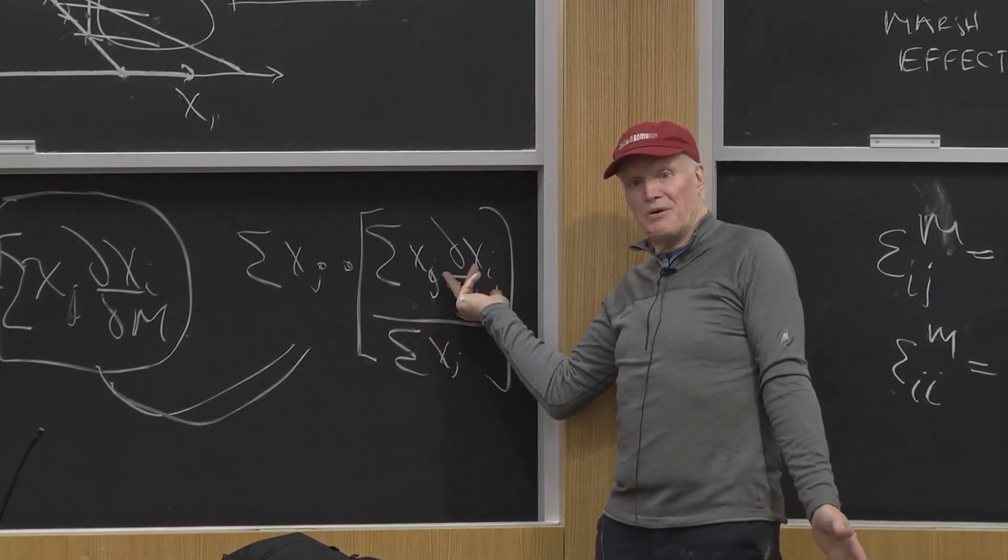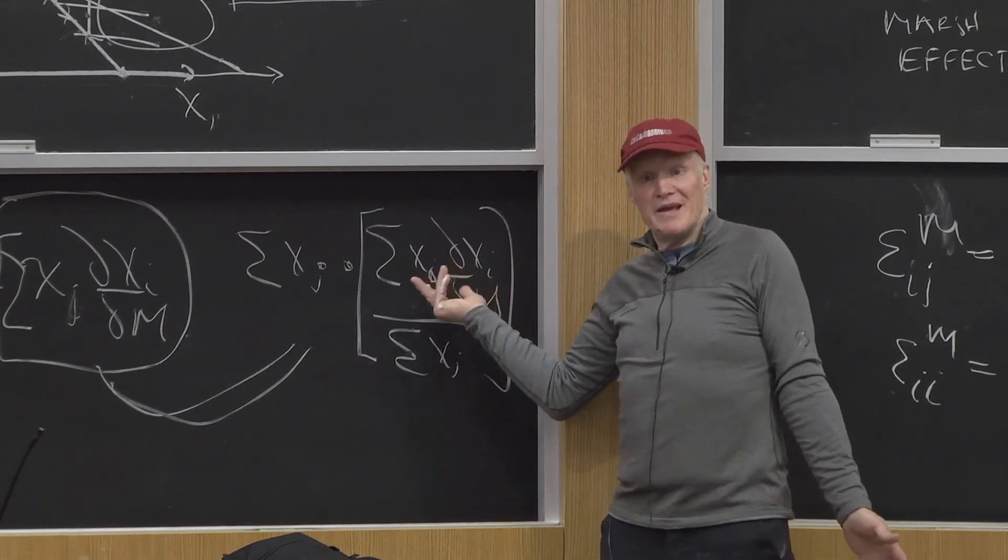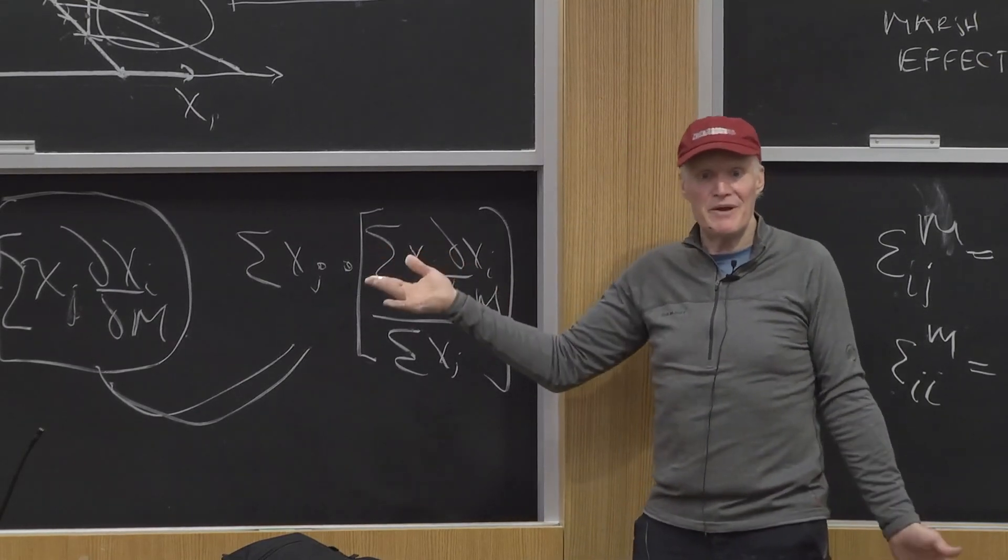If this derivative is the same for everybody, then there's an aggregate income effect. If this term differs across people, then the income response is going to be different depending on how I generate the income.